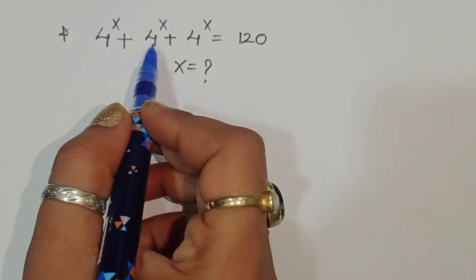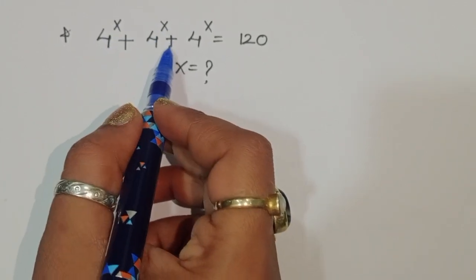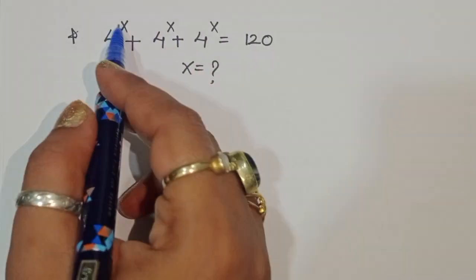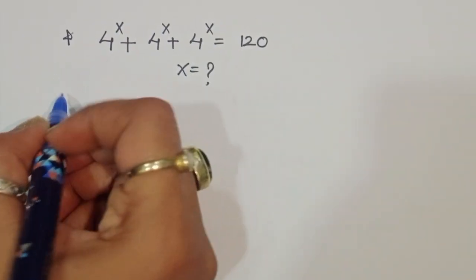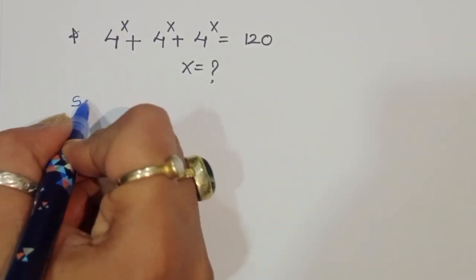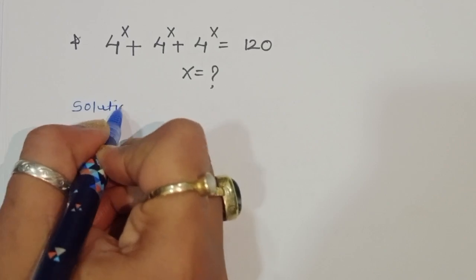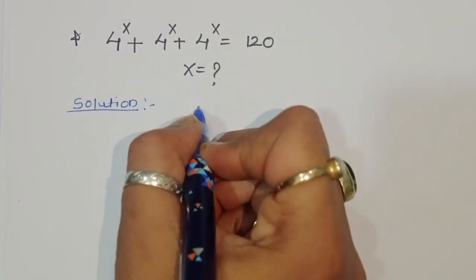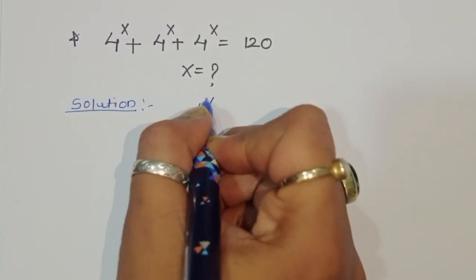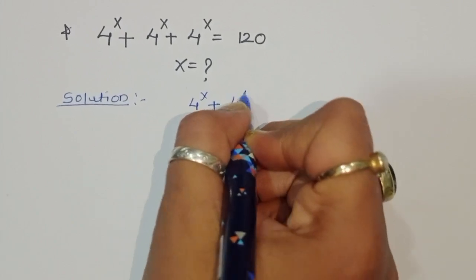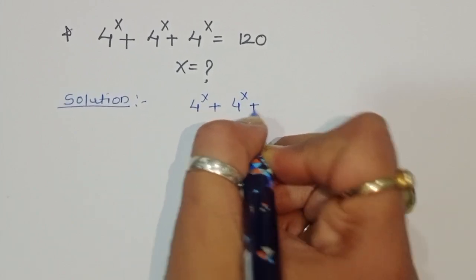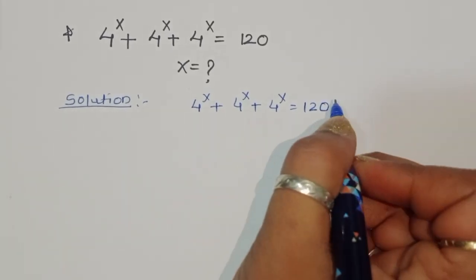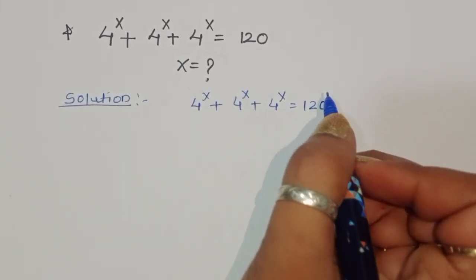The question is: 4 power x plus 4 power x plus 4 power x is equal to 120. We have to find out the value of x here. Let's see the solution.